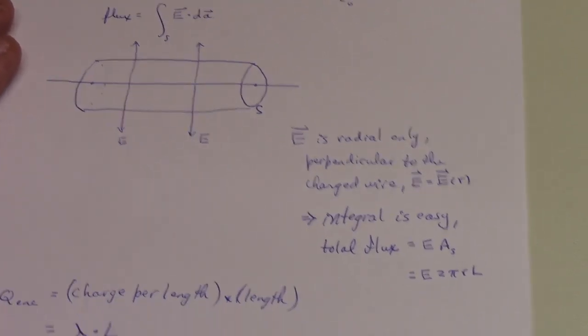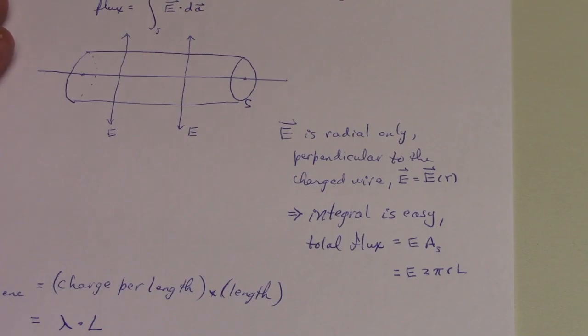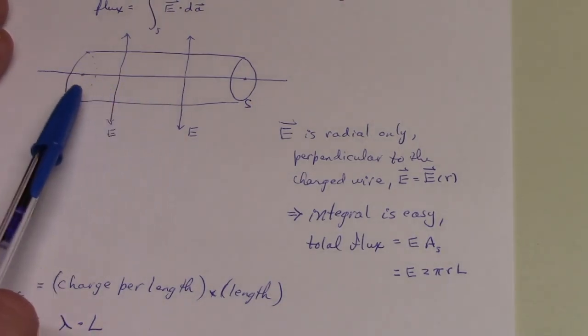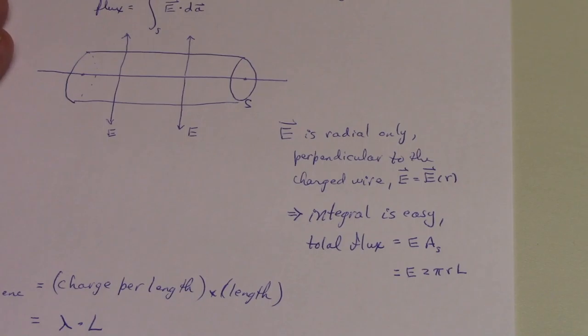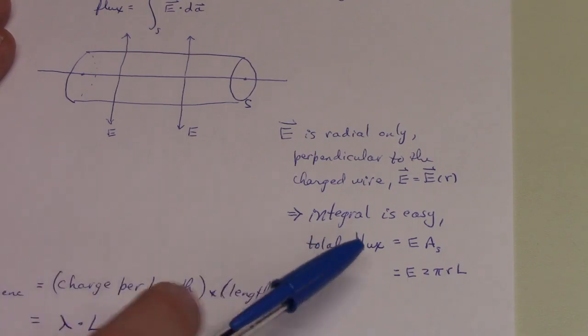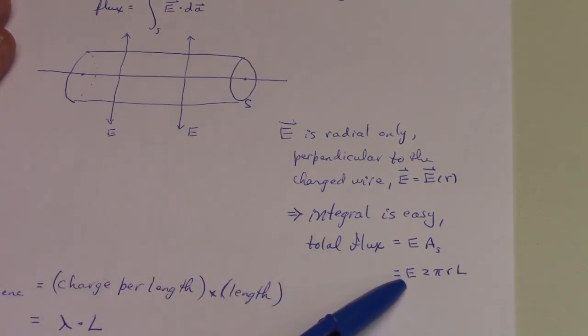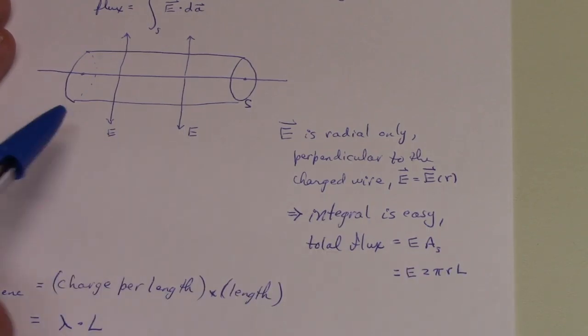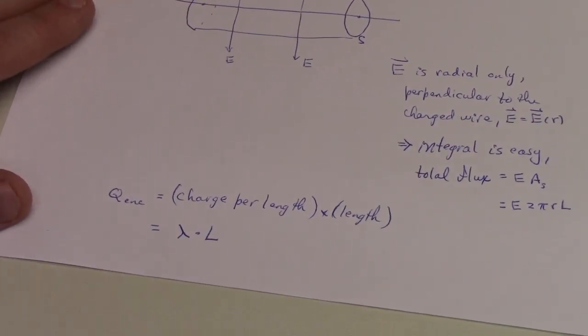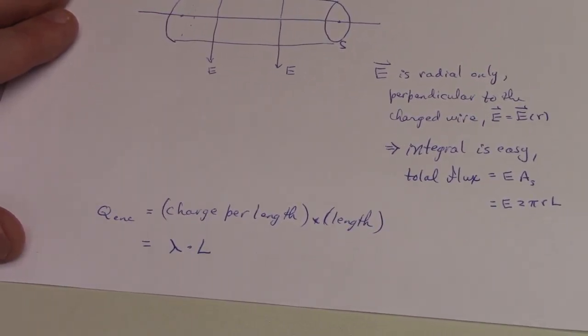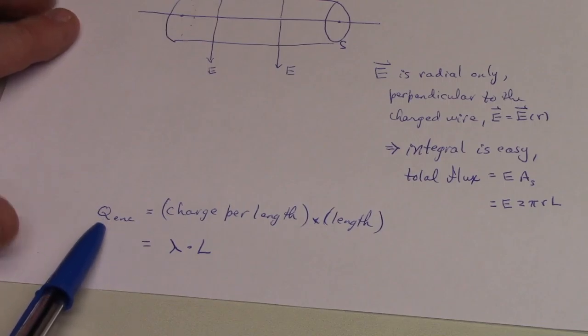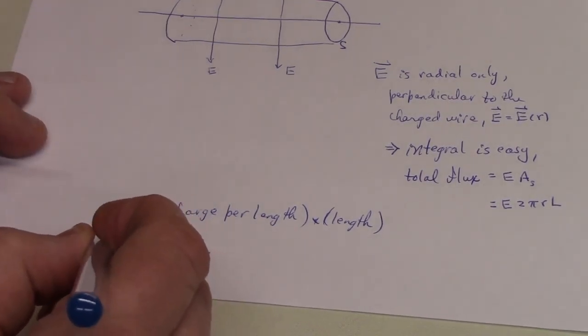By Gauss's law, we know that the total flux, because we've set this symmetry up in a very contrived way, that surface integral becomes very easy. It just becomes E times the surface area of the pill bottle, which is 2 pi r times L. That's the flux, and that has to equal the charge enclosed divided by epsilon naught.